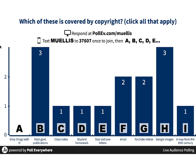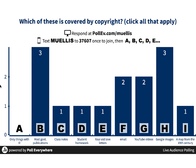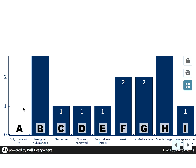Most government publications automatically go into the public domain, so they are free for use. It may depend a little bit on whether they were contracted to a different agency or commercial entity, or if they are a state or local government, but U.S. federal government publications are free to use. A map from the 19th century is so old that it has already gone into the public domain. So the next thing to look at is: how long does copyright last?